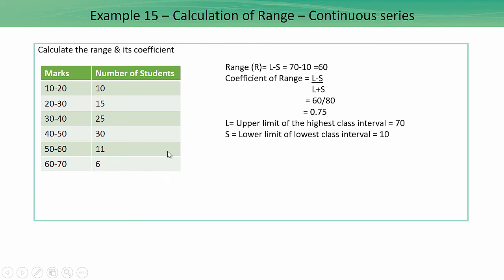Now we calculate the coefficient of range, which is L minus S divided by L plus S. L is the upper limit of the highest class interval and S is the lower limit of the smallest class interval. L minus S is 60, and L plus S is 80, so the coefficient of range equals 0.75.